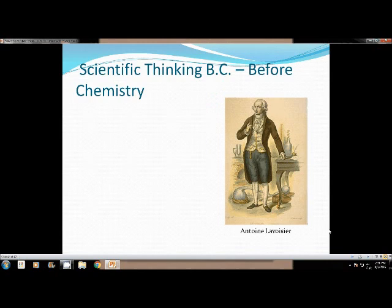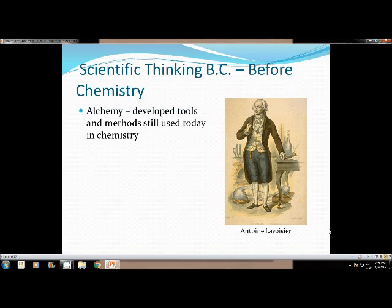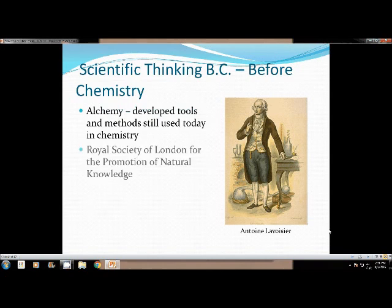Before we got chemistry, there were scientific ways of thinking about things. The popular one was called alchemy. Even though alchemy we know today is not a true and based in science method, it did develop a lot of tools and methods that we still use today in our chemistry. Antoine Lavoisier is pictured here. He was really big in the Royal Society of London for the promotion of natural knowledge. This was the first scientific organization to try and group together scientific findings about chemistry and the observations and experiments to develop into what we know today as chemistry.